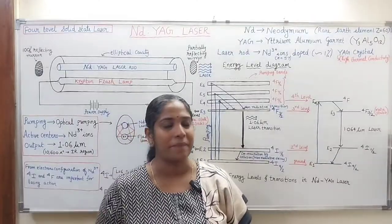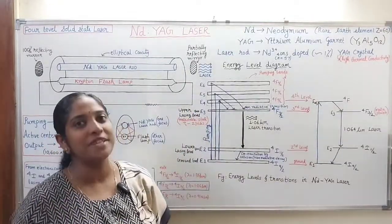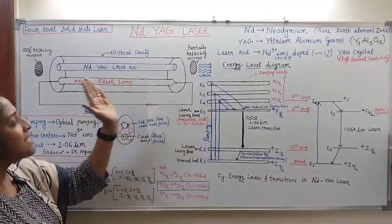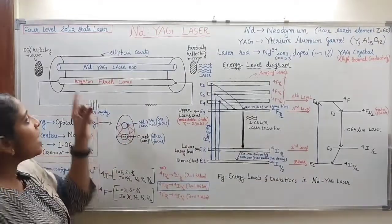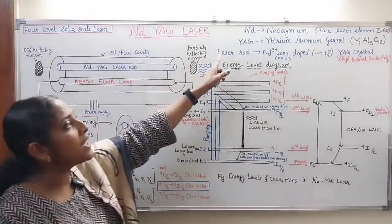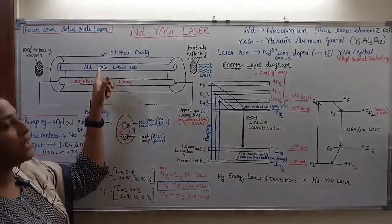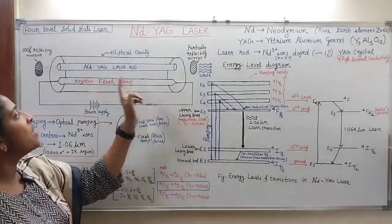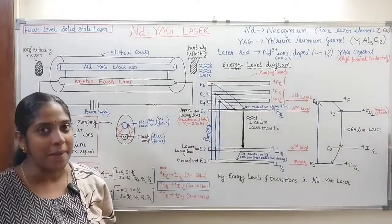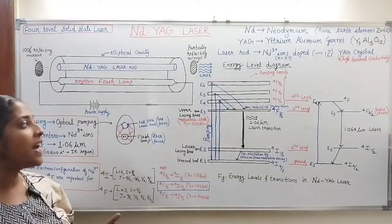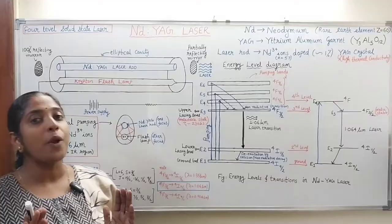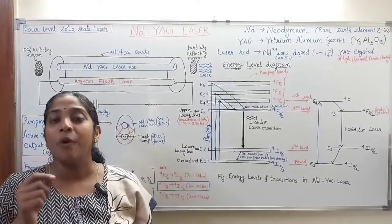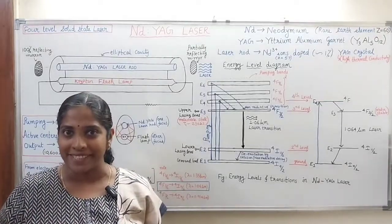YAG crystal is used because it has high thermal conductivity, so most of the heat energy produced can be dispersed by it. Regarding the construction of the Nd:YAG laser: we have an elliptical cylindrical cavity. An ellipse has two foci — along one focal plane we have the laser rod, that is the neodymium-doped YAG crystal, and along the other focal plane we place a krypton flash lamp for optical pumping.